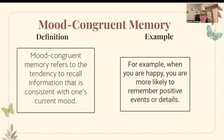Mood congruent memory. Mood congruent memory refers to the tendency to recall information that is consistent with one's current mood. For example, when you're happy, you're more likely to remember positive events or details.